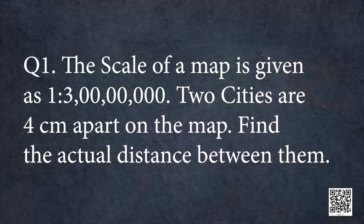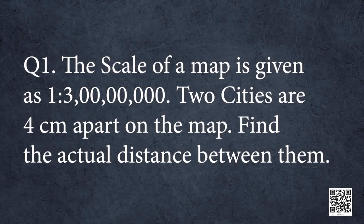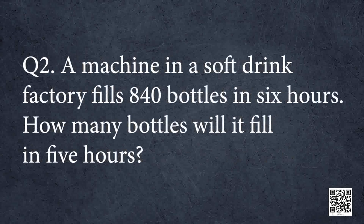Now try to solve these problems on your own. Question 1: The scale of a map is given as 1 is to 3 crore. Two cities are 4 cm apart on the map. Find the actual distance between them. Question 2: A machine in a soft drink factory fills 840 bottles in 6 hours. How many bottles will it fill in 5 hours? I hope you are clear about the concept of direct proportion.